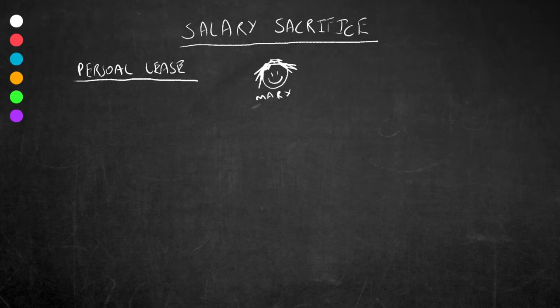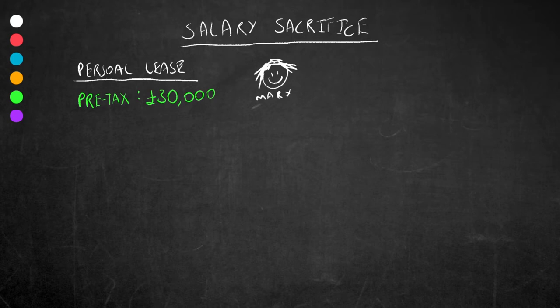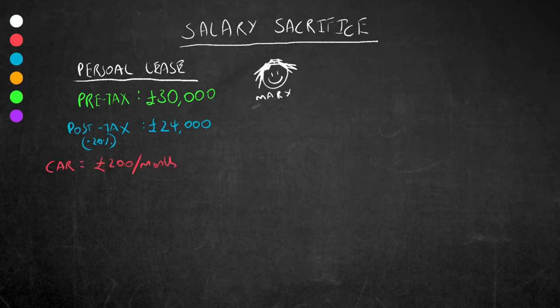Mary wants a new car. Her annual income pre-tax is £30,000. After tax, she takes home £24,000, 20% tax rate. Now she has been eyeing this electric car that she wants to lease that costs roughly £200 a month over four years. This works out to be £200 times 12, £2,400 a year in lease fees.